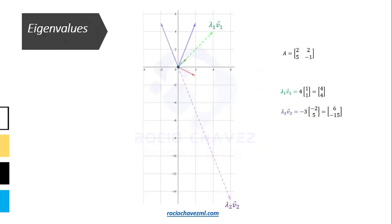To graph the effect of the eigenvalues on their respective eigenvectors, we locate the vector obtained by multiplying lambda 1 by v1, which is 4,4, marked here with a dotted green line. And the vector obtained by multiplying lambda 2 by v2, which is 6 minus 15, indicated here with a dotted purple line.